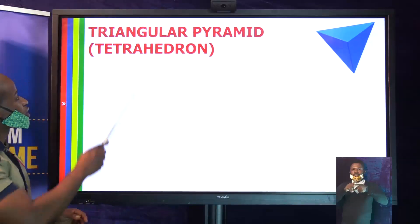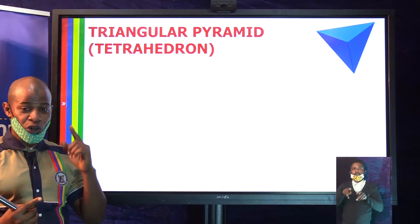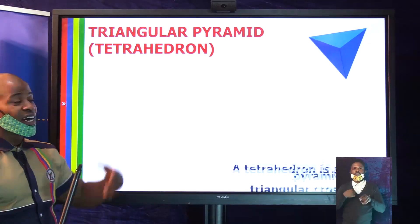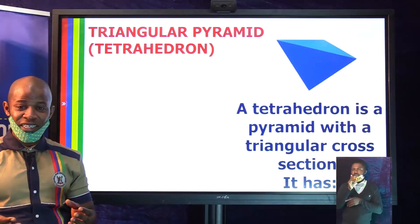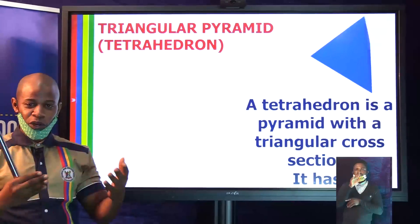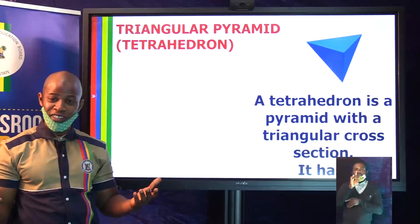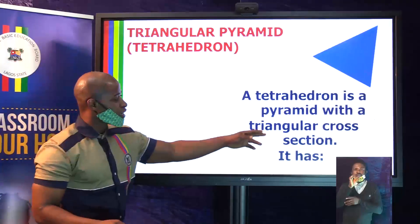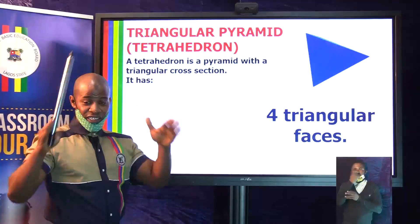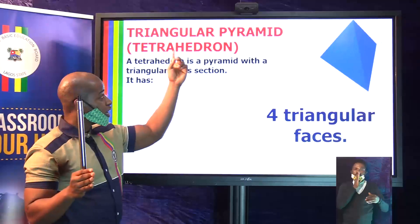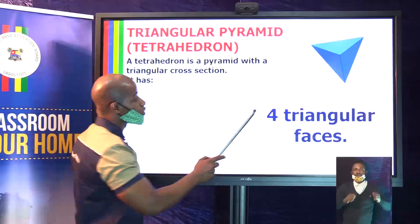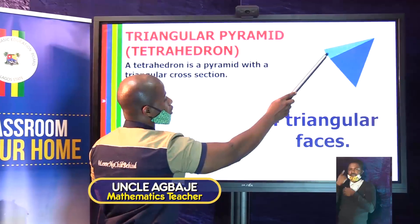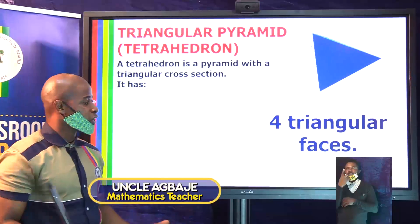The next shape to consider is the triangular pyramid. By the name, the base will be a triangle. We also call it a tetrahedron. 'Hedron' means face and 'tetra' means four, so a tetrahedron has four faces. All these faces are triangular — the side faces are triangular and because it's a triangular pyramid, the base is also triangular.